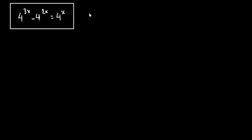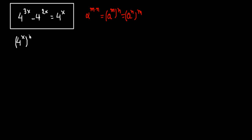We know that a number a raised to the power of m times n can be written as a raised to the power of m, and all of this to the n. So here we have 4 raised to the x and all of this to the third power, and 4 raised to the x and all of this to the second power, equals to 4 raised to the x.